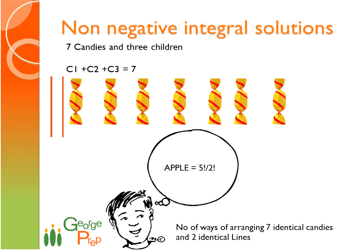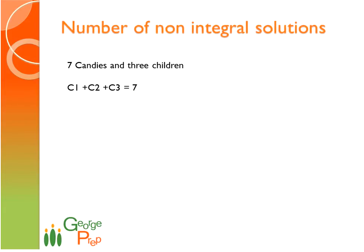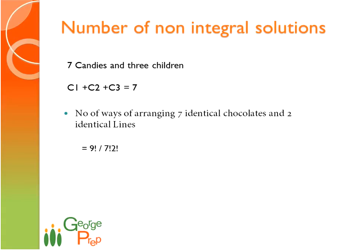There are five letters, so it is 5 factorial. And there are two letters which are similar, so divided by 2 factorial. So the question we have in hand is similar to having nine letters of which seven are of one kind and two are of the other kind. So the answer for this has to be 9 factorial divided by 7 factorial into 2 factorial, which is nothing but 9C2.